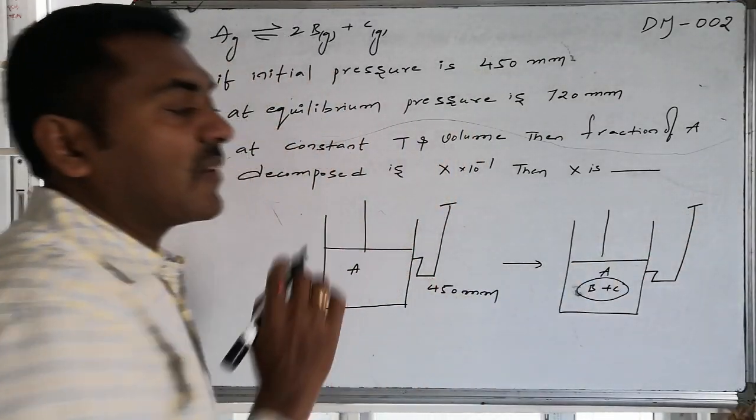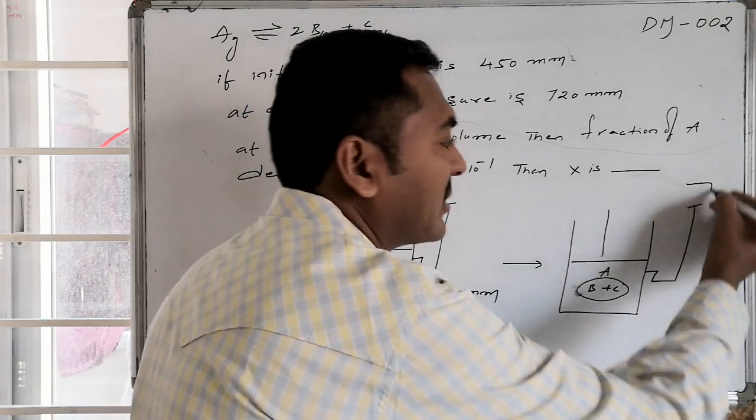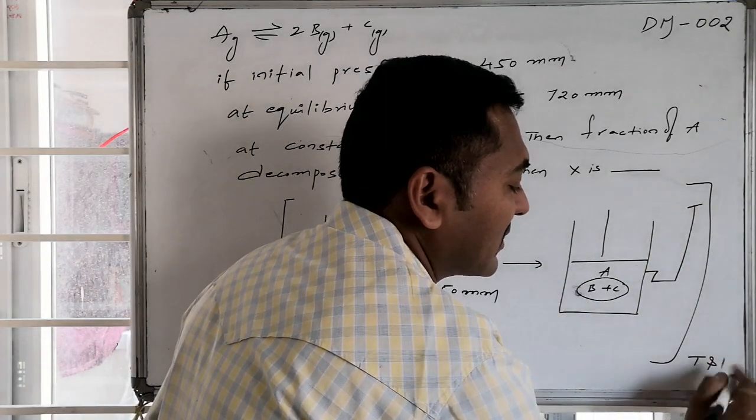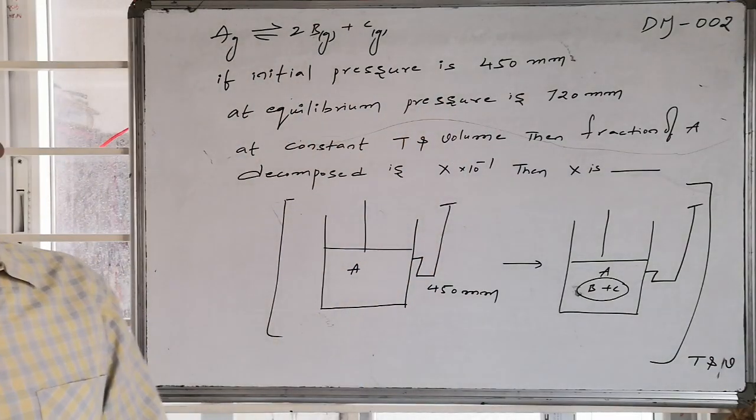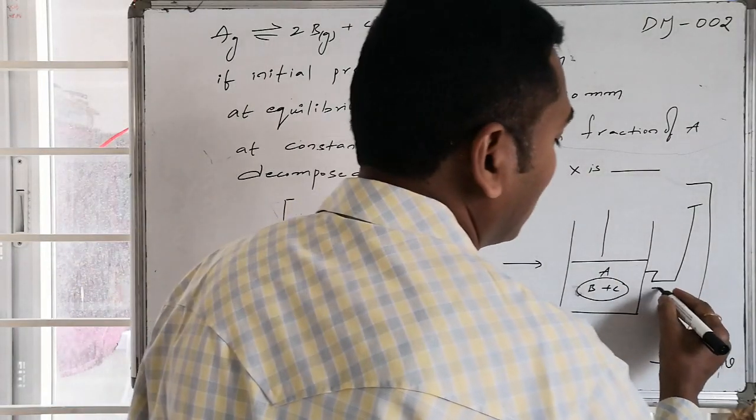Whereas by keeping the same value, by maintaining the same temperatures for the entire experimental conditions, temperature and volume is constant. Only pressure is changed. That pressure is found to be 720.